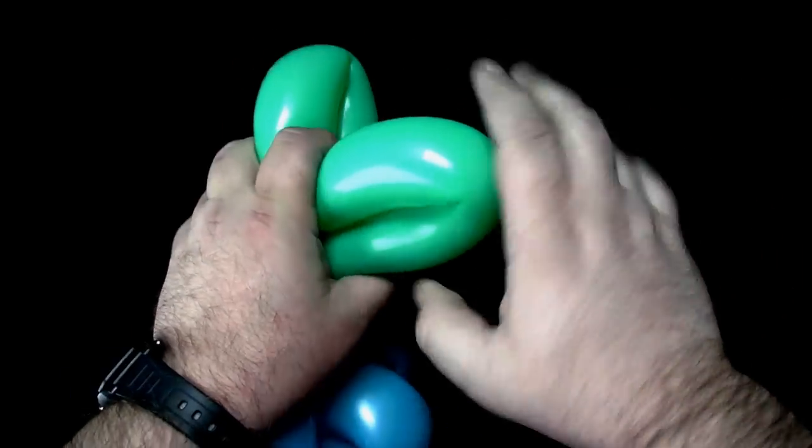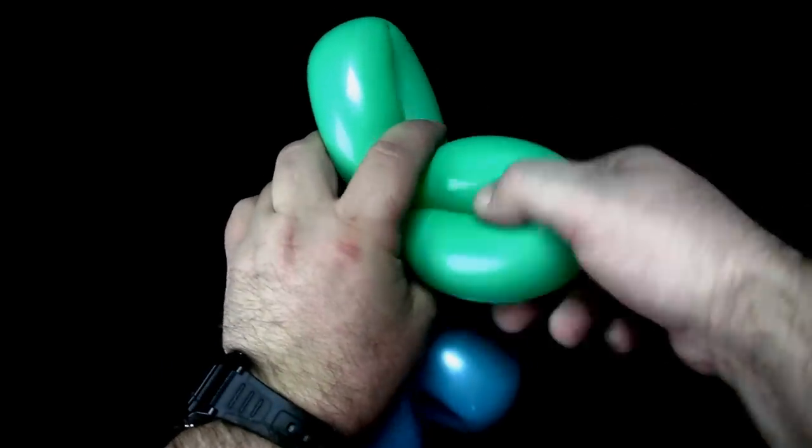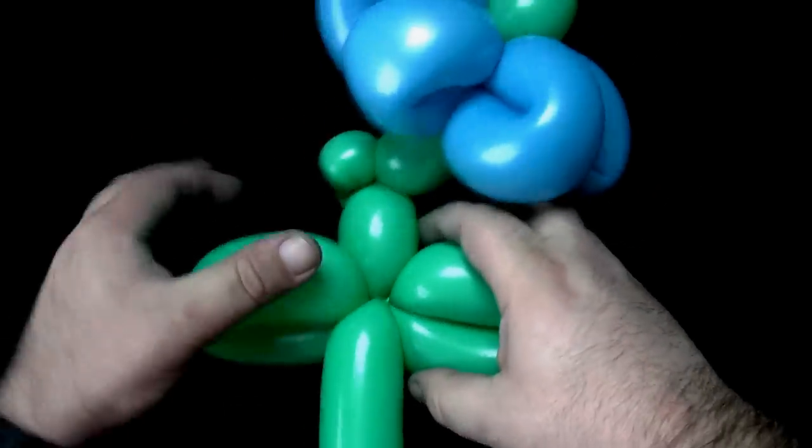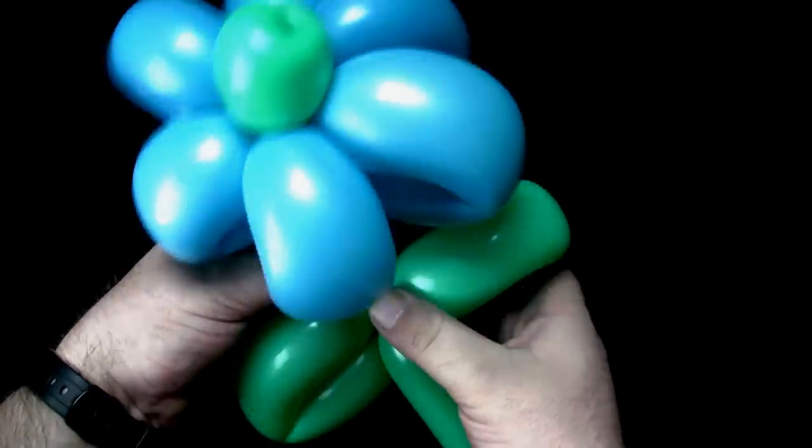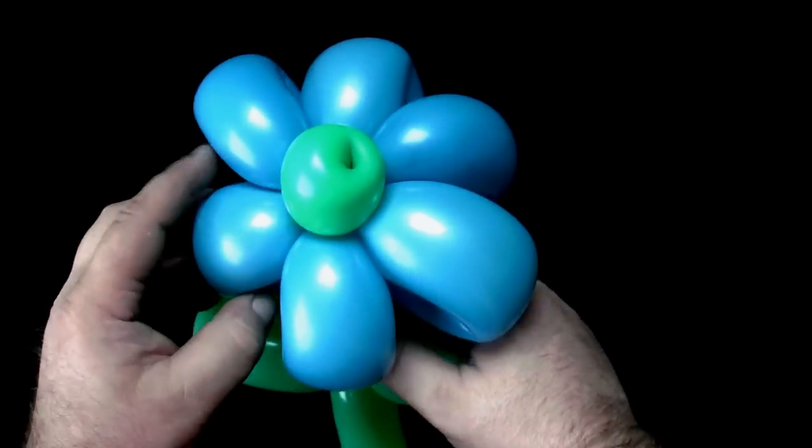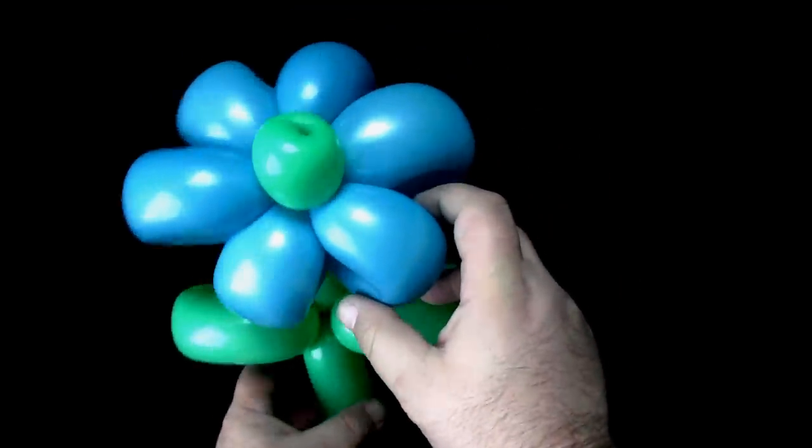Twist another loop twist the same size as the first one. Adjust the loop twists so they are sticking straight out to the sides while the rest of the balloon forms a straight line. Arrange the petals to your liking.